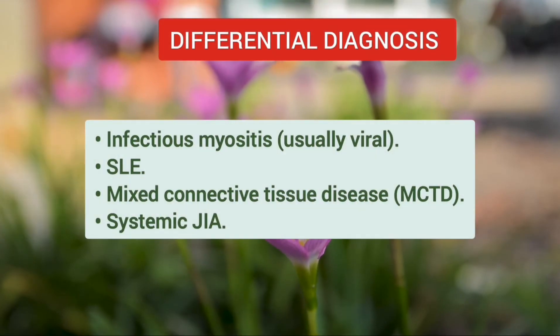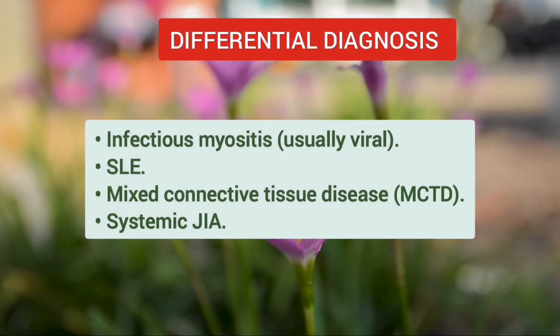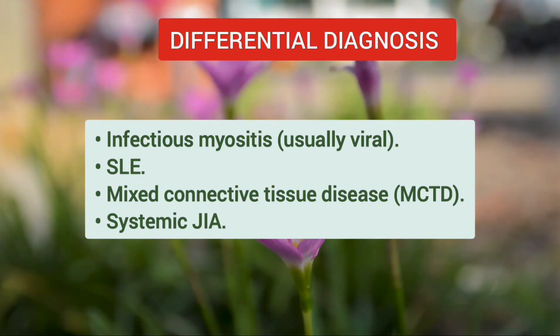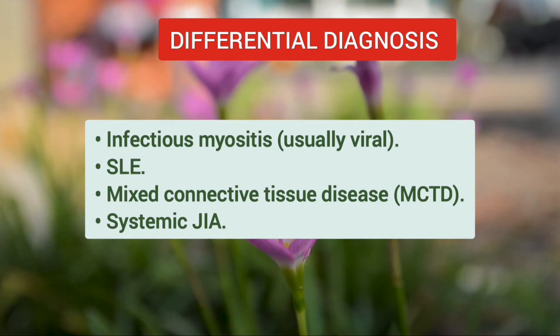The differential diagnosis of JDM includes infectious myositis, systemic lupus erythematosus, mixed connective tissue disease, and systemic juvenile idiopathic arthritis.